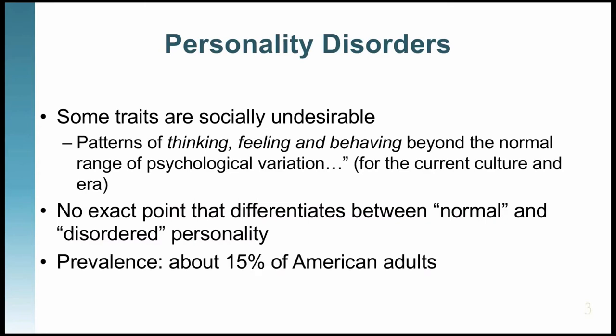Personality disorders are fairly prevalent. If you count up the prevalence for each of the ten disorders, it totals about 15% of the population — so out of every 100 people, about 15 would qualify as having at least one disorder. And remember, if you have one disorder, it's very likely you qualify for more than one because of the comorbidity issue.